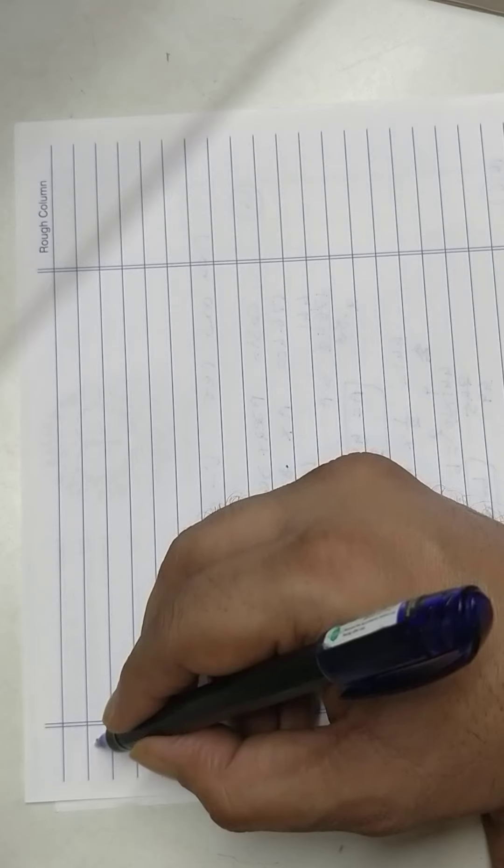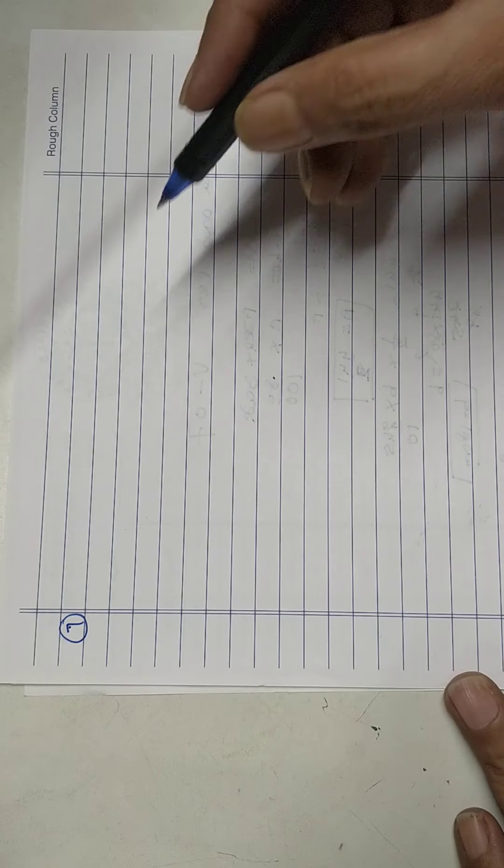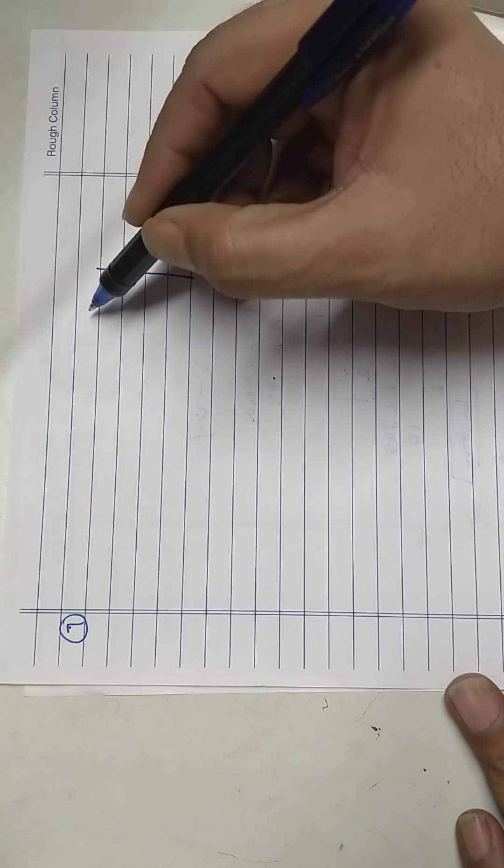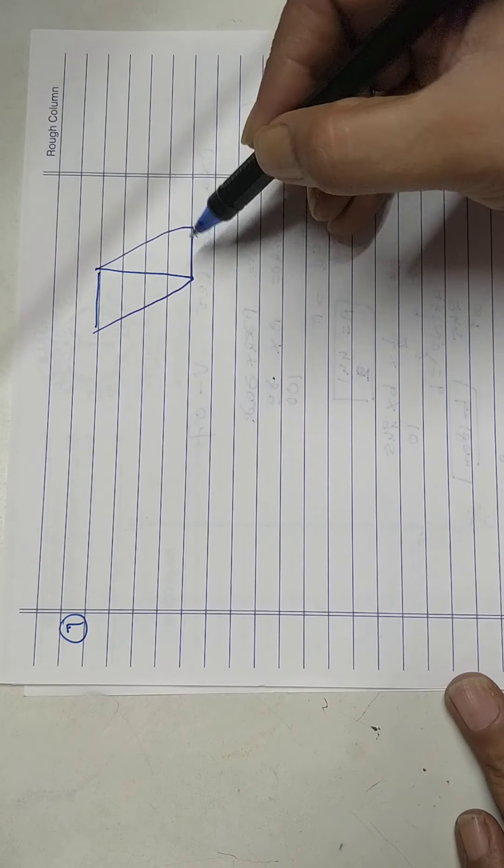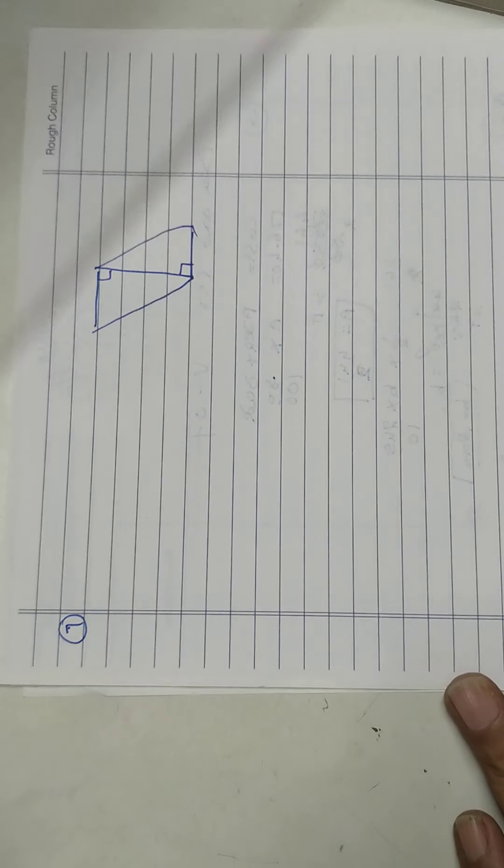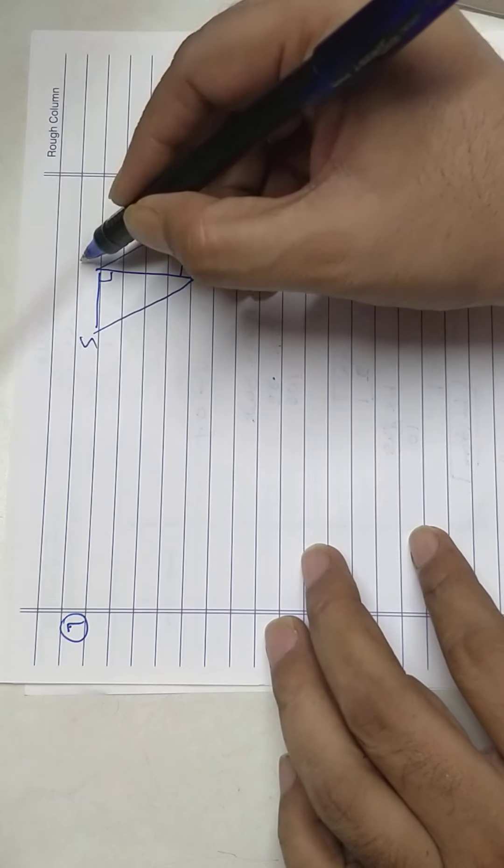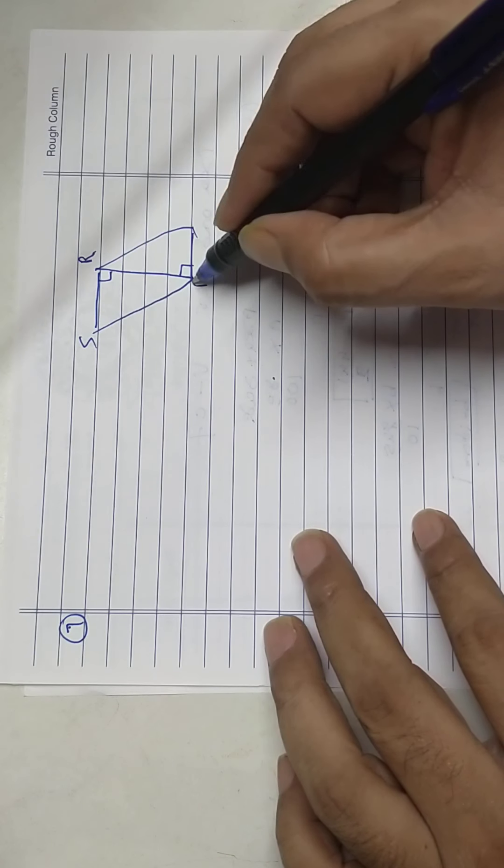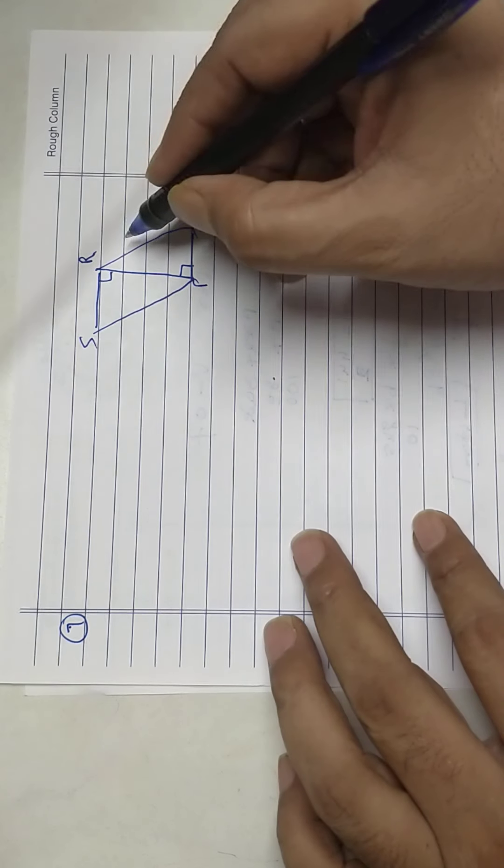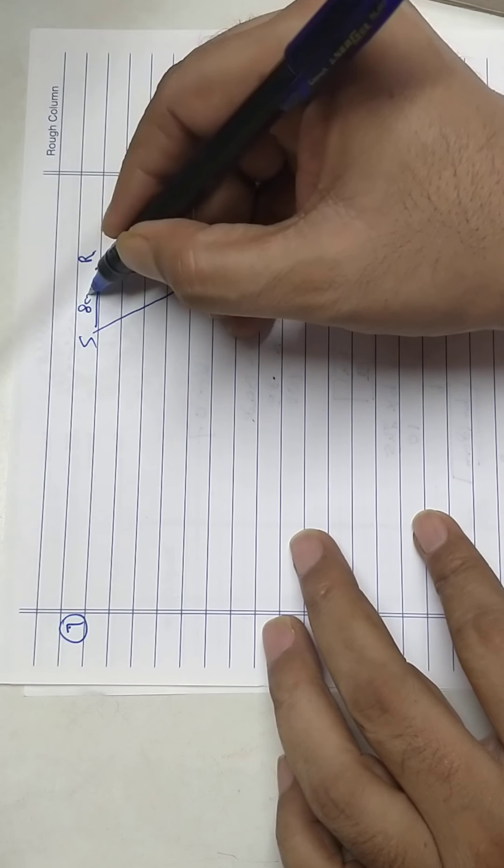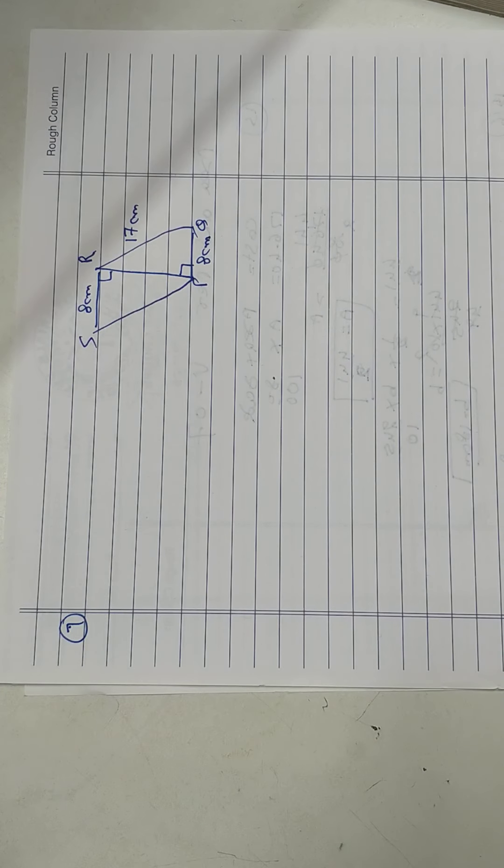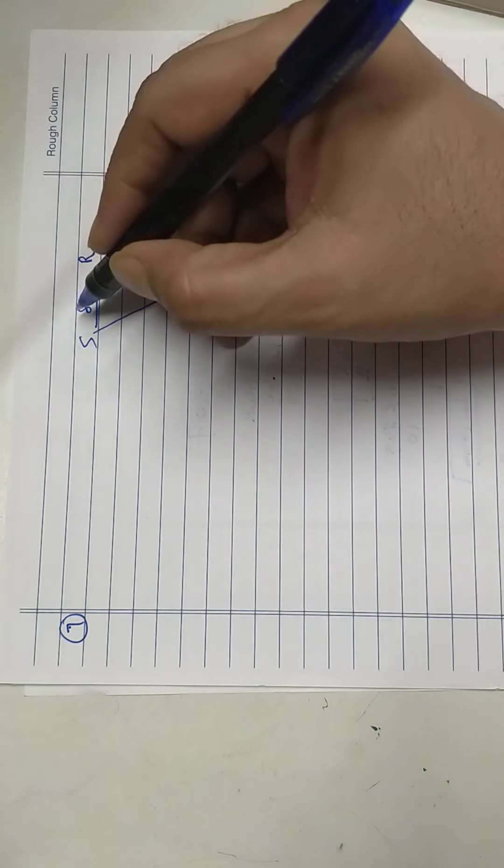Sum number 7. Two right angle triangles combined. S, R, P, Q. This is 17, this is 8, this also 8, this is 6.